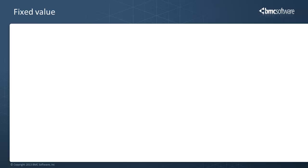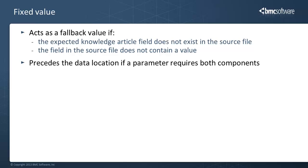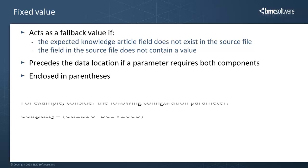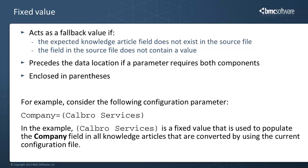When you specify a parameter in the configuration file, the fixed value serves as a fallback value if the article conversion tool is unable to locate the expected field in the source file, or if a field in the source file does not contain a value. If a parameter requires the fixed value as well as the data location, you must enter the fixed value first and enclose it in parentheses. For example, consider a configuration file parameter where "Calbro Services" is a fixed value used to populate the company field in all knowledge articles converted using the current configuration file.